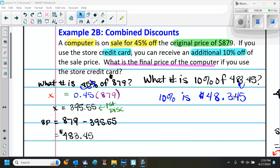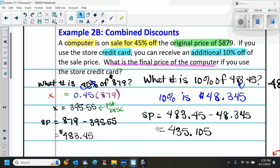That 10% we want to subtract from this amount right here. So we subtract 483.45 minus 48.345, and that will give us 435.105. But of course this is money, so we need to round to the nearest cent. That 0 is in the hundredth place, so the 5 tells me what to do. That means I need to round that 0 up to a 1, and that gives us $435.11. So the final price of the computer if you use the store credit card is $435.11.